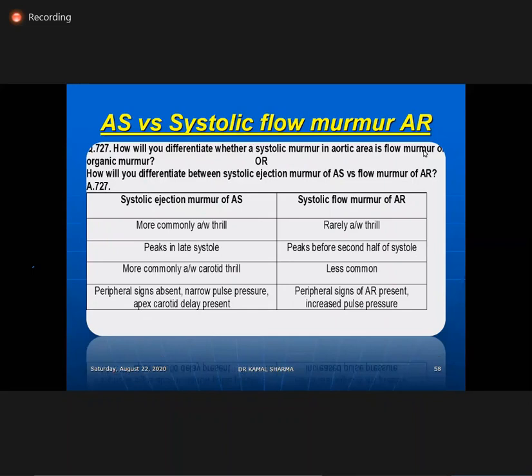Systolic murmur of AS versus systolic flow murmur of AR: thrill is more commonly associated with ejection murmur of AS — systolic flow murmur of AR will never be associated with thrill. AR flow murmur peaks before the second half of the cardiac cycle and peripheral signs of AR are present, indicating severe AR. Peripheral signs are absent in pure AS. This helps determine whether you are dealing with AS murmur or systolic flow murmur of AR.